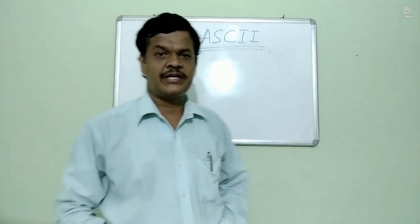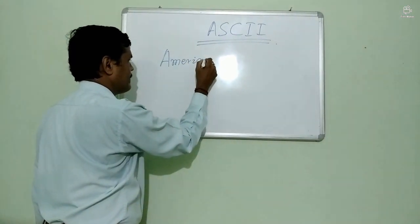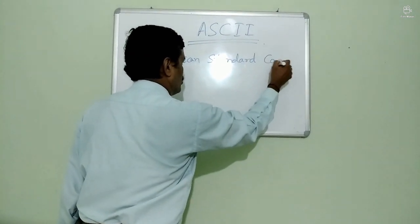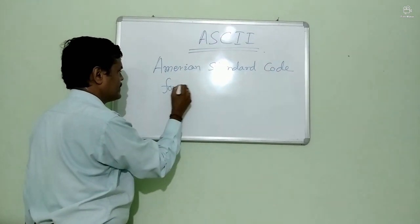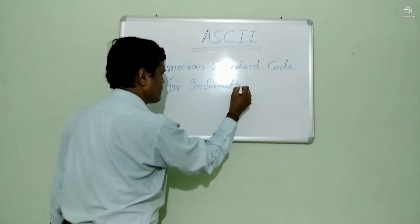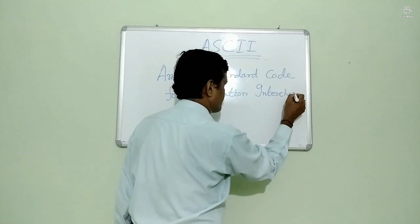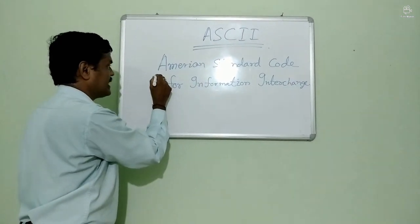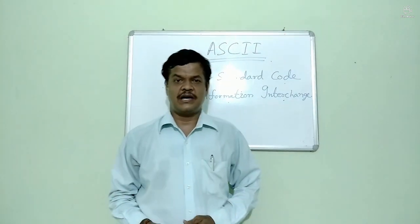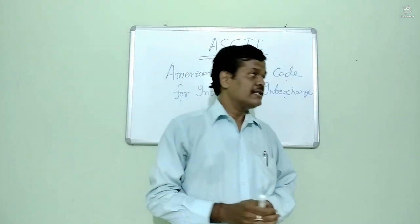ASCII stands for American Standard Code for Information Interchange. It is the abbreviation of ASCII and it is a coding system which is used to encode characters.